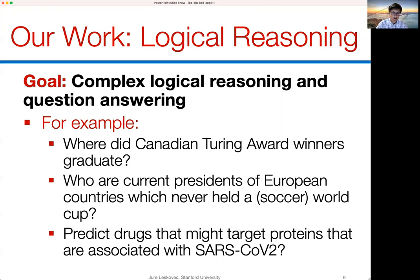Or for example: who are the current presidents of European countries which never held the Football World Cup? Here we need to identify presidents of European countries, identify countries that held the World Cup, take the negation of that, and find which countries are in Europe but didn't hold the World Cup. Another realistic case: can we predict drugs that might target proteins associated with SARS-CoV-2? That's a complex prediction problem about identifying proteins and predicting links between drugs and proteins.